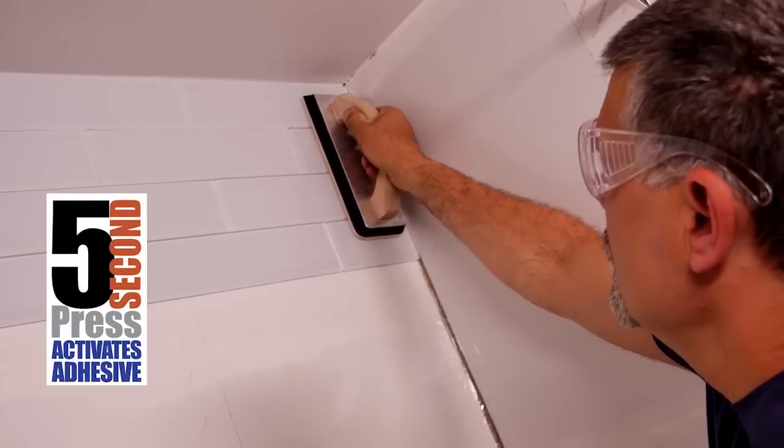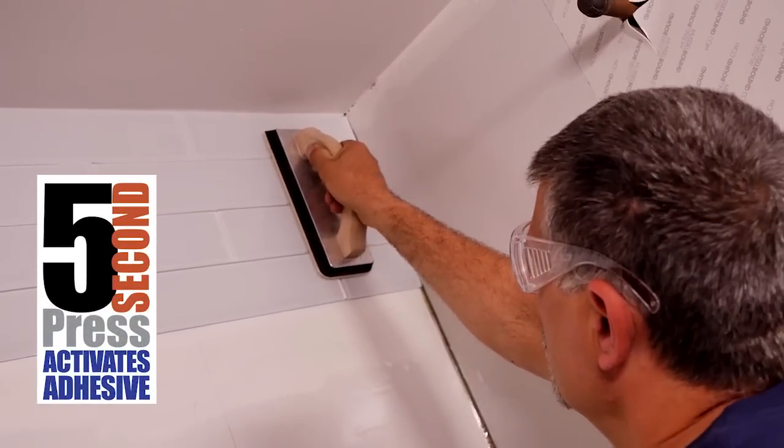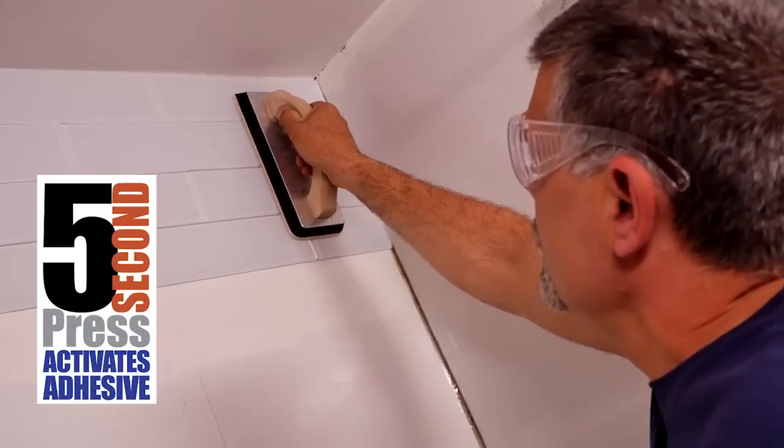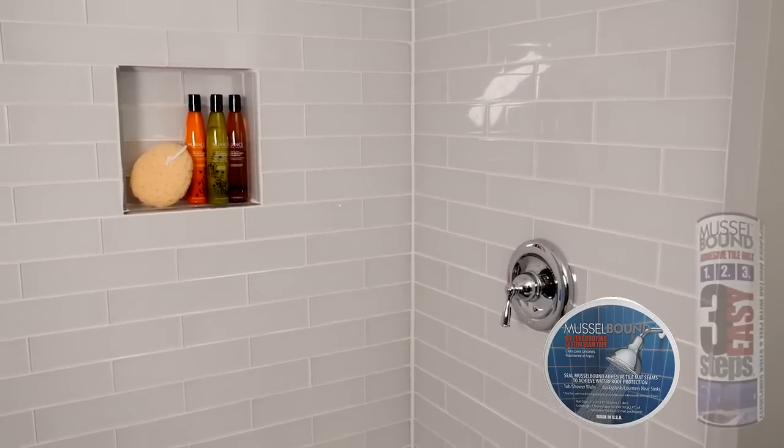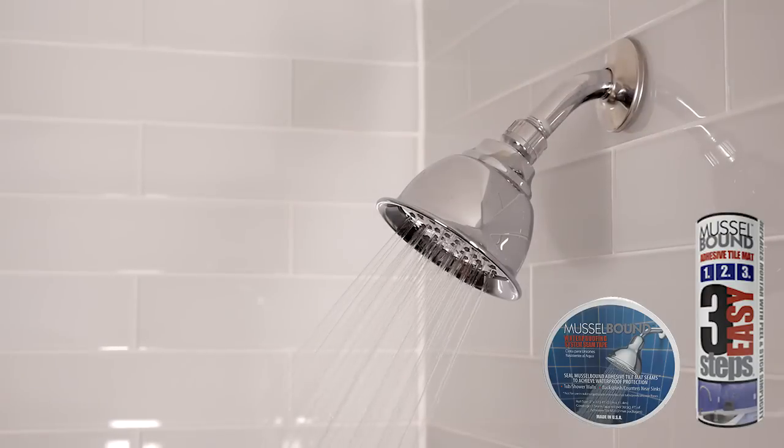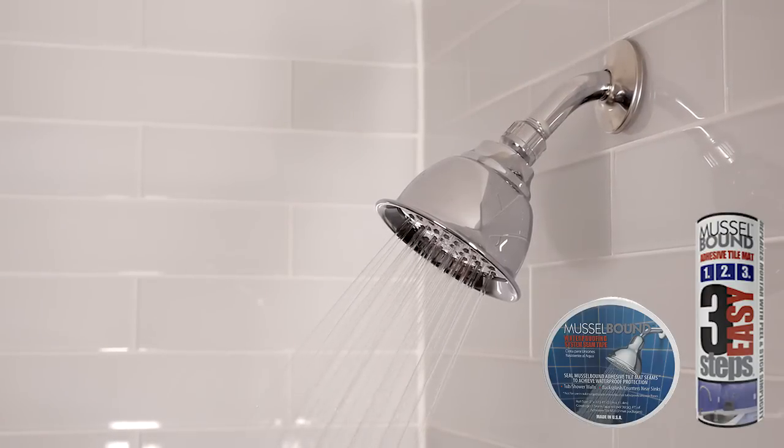All tiles require a firm five-second press to activate Musclebound's unique adhesive and produce a lasting bond. Musclebound Adhesive Tile Mat and Seam Tape are the only combined waterproofing membrane and tile adhesive.